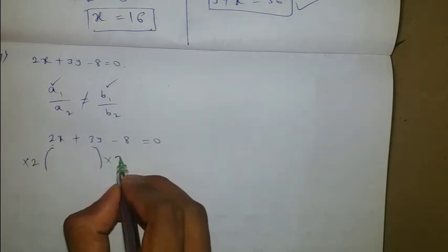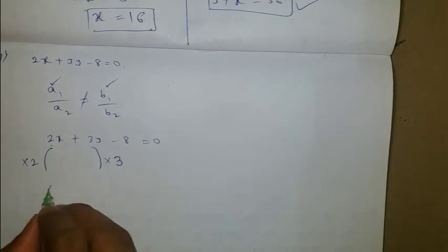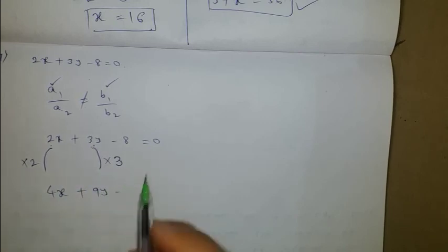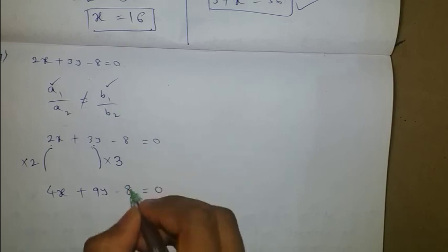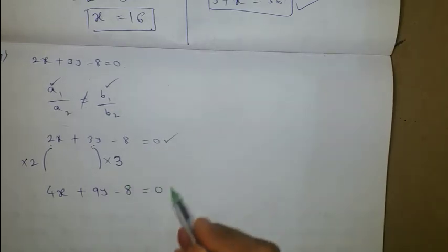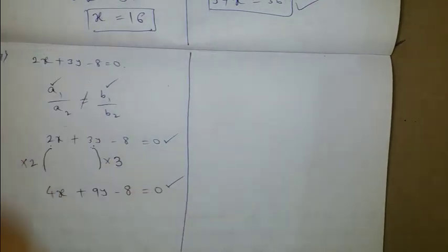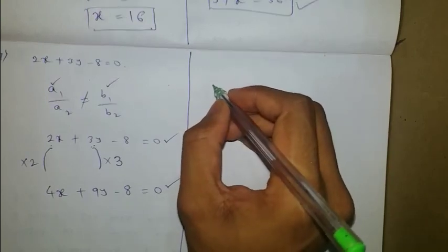Multiplying x coefficient by 2 and y coefficient by 3 gives the new equation 4x plus 9y minus 8 equals 0. Since 2/4 is not equal to 3/9, these two equations will have intersecting lines. For the same question, he also asked about creating an equation for parallel lines.